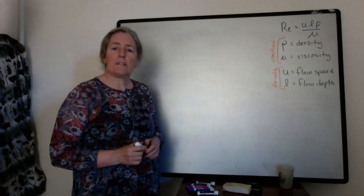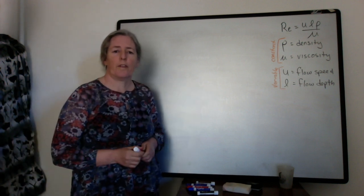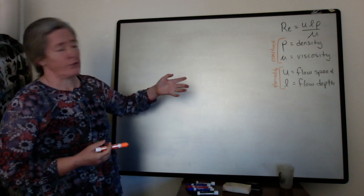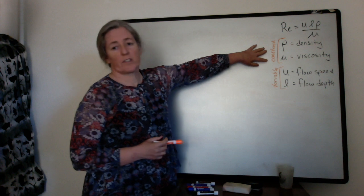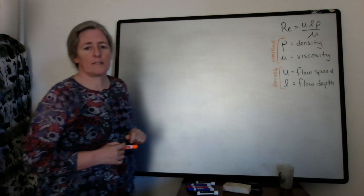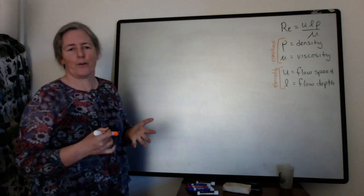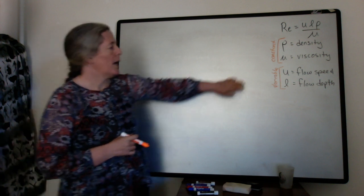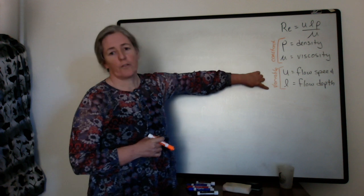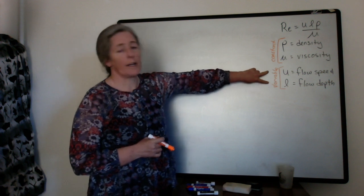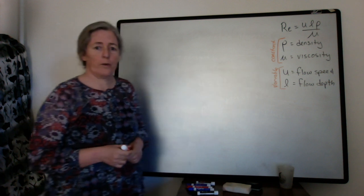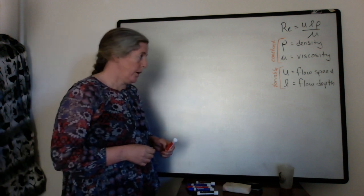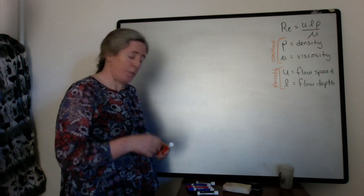The Reynolds number varies within a flow. If you have the same fluid, for example water, the density and viscosity remain constant, and so those don't change within, say for example, a channel. However, the flow speed and the flow depth vary within a water flow, both as the geometry of the flow changes, but also with depth into the flow.